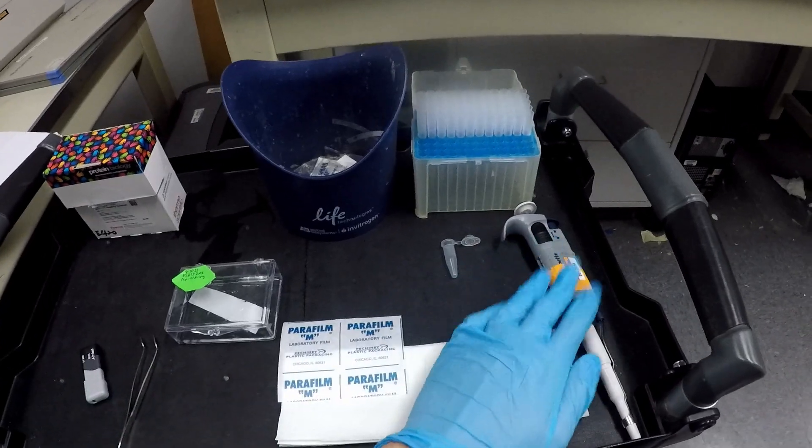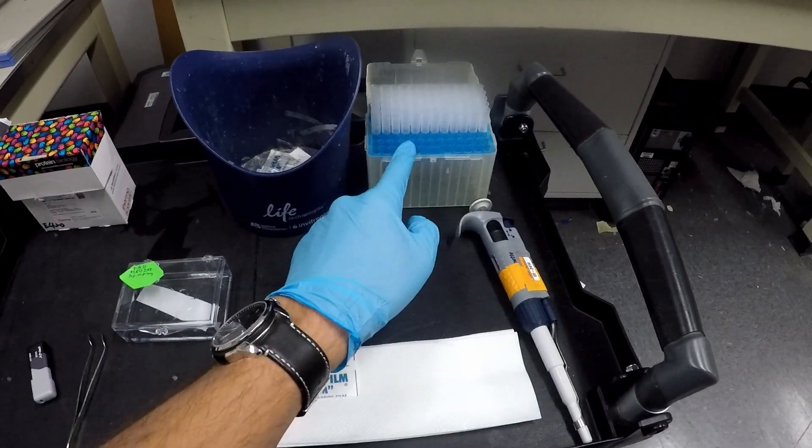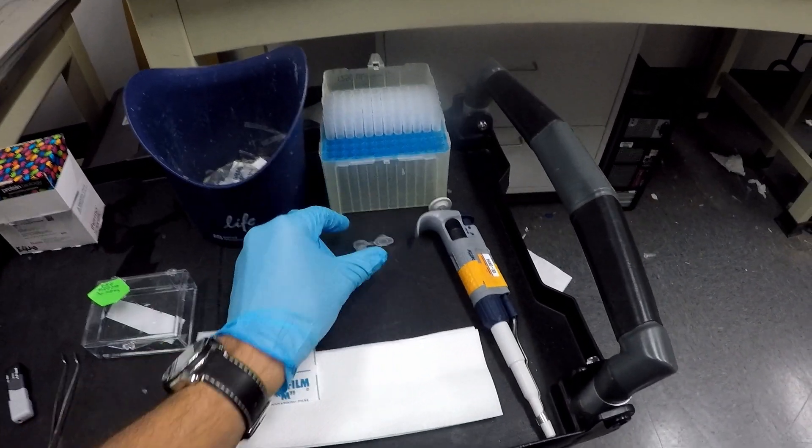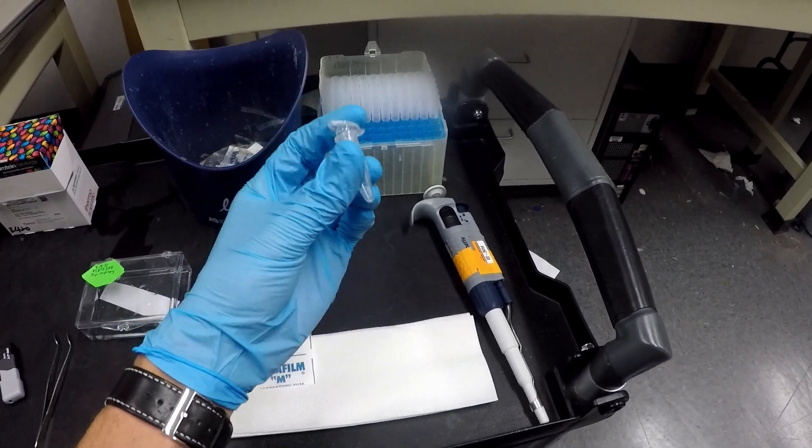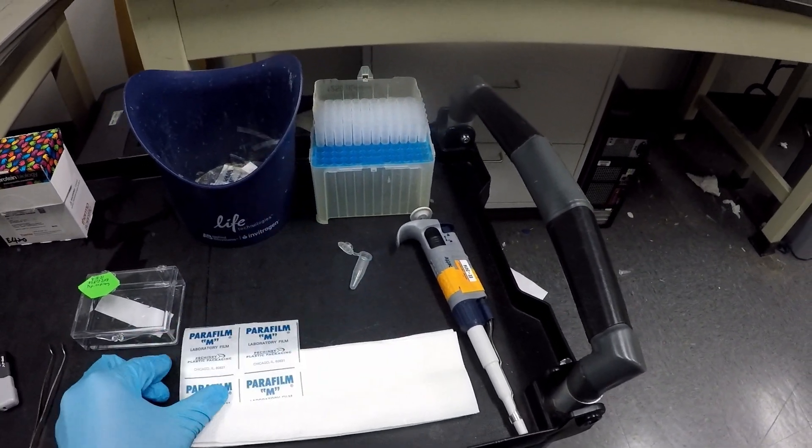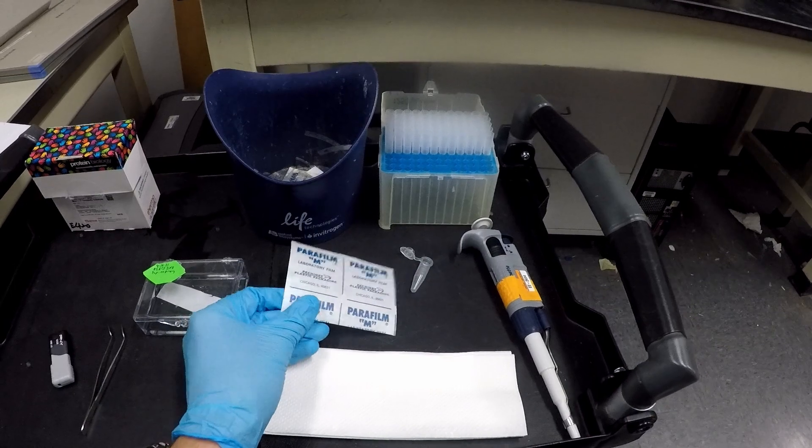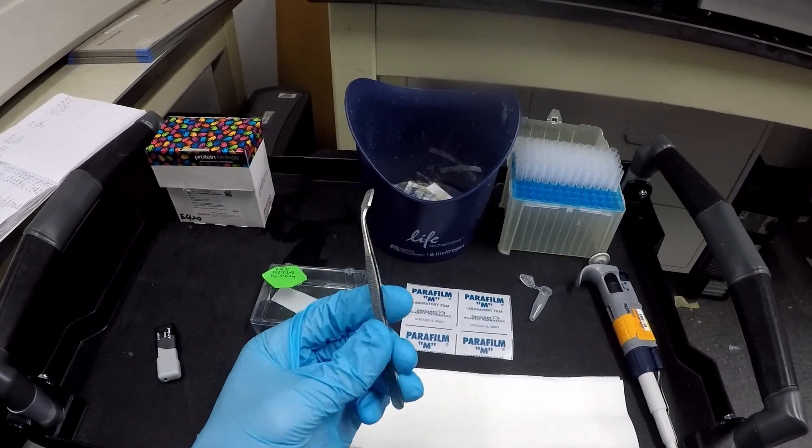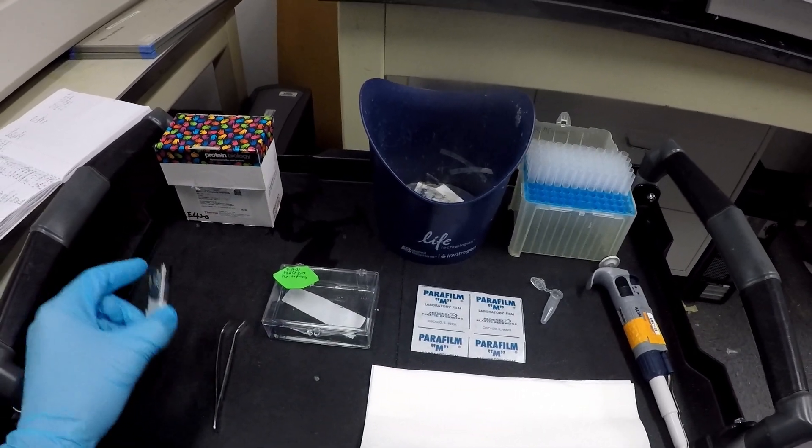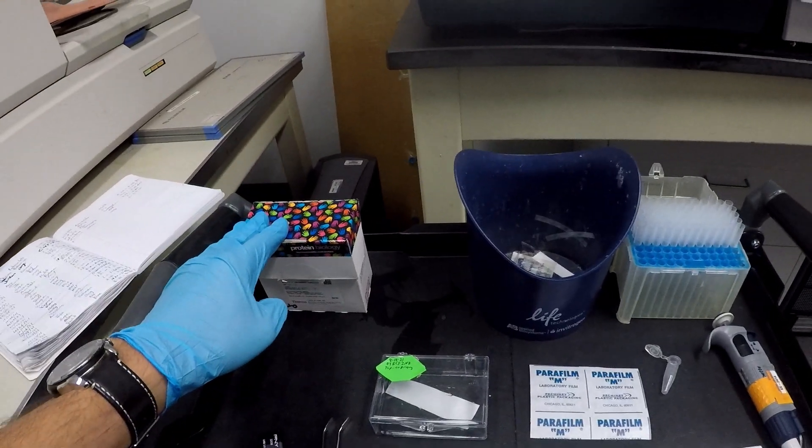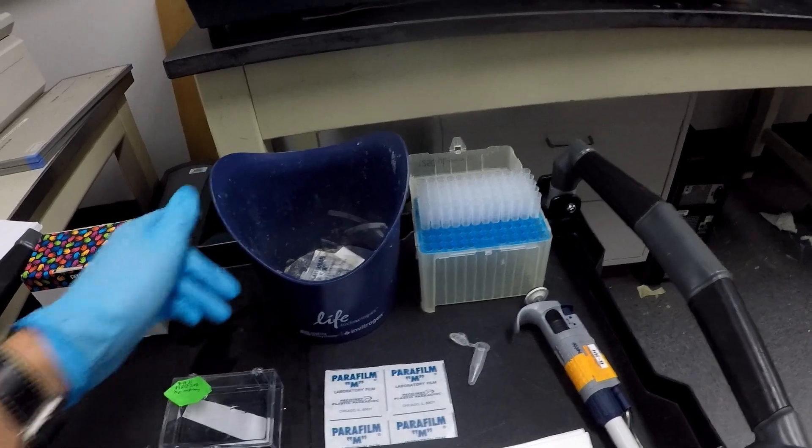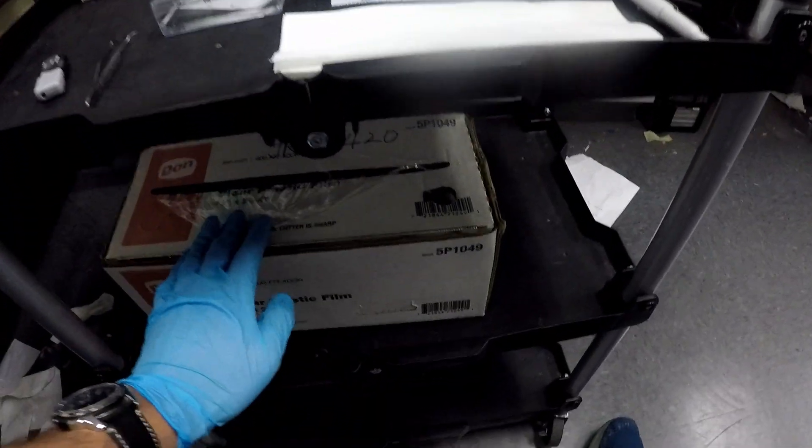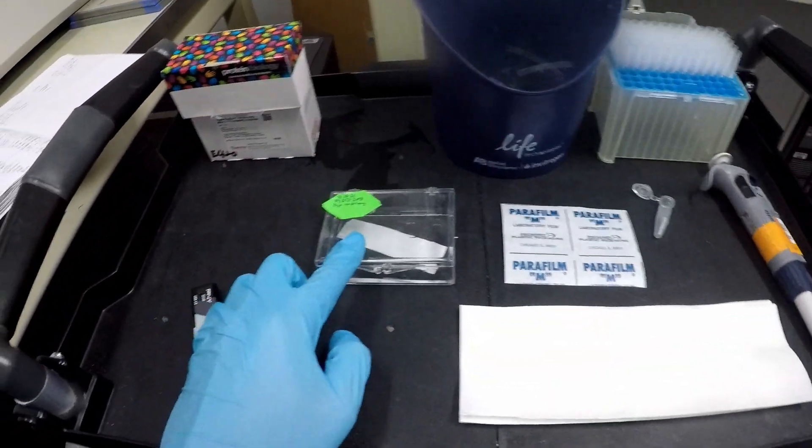So what you want to have is your one milliliter pipette, one milliliter pipette tips, more of these Eppendorf tubes, at least one of them, a section of parafilm, some paper towel, these flat tweezers really help, USB drive, the imaging solution, this garbage bin is optional, some saran wrap, and of course your membrane itself.